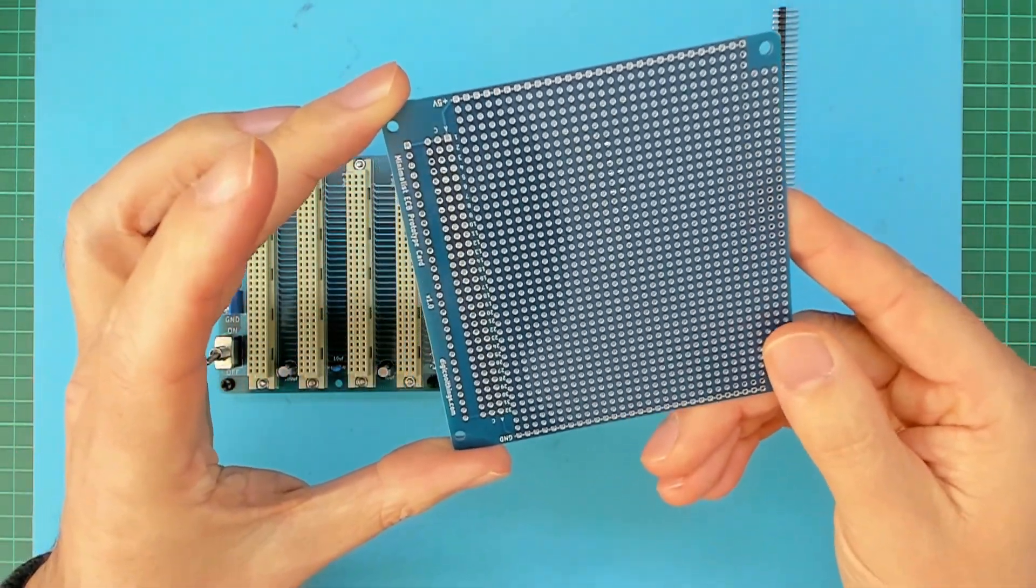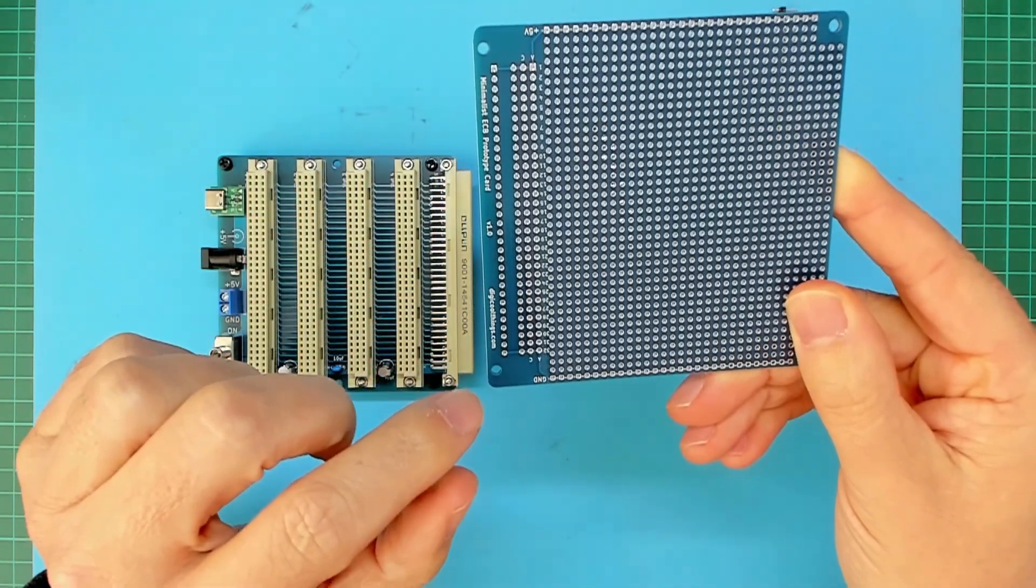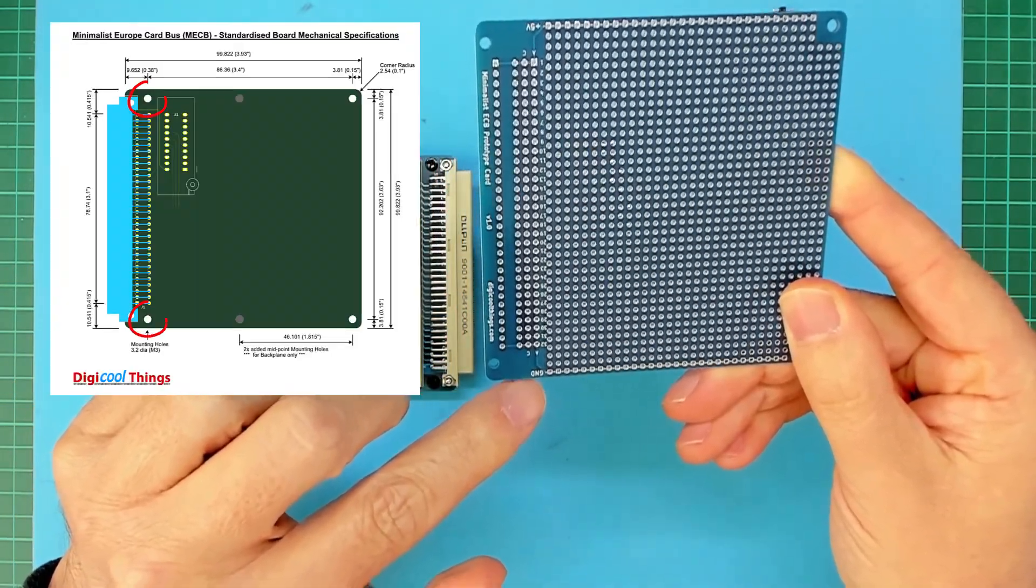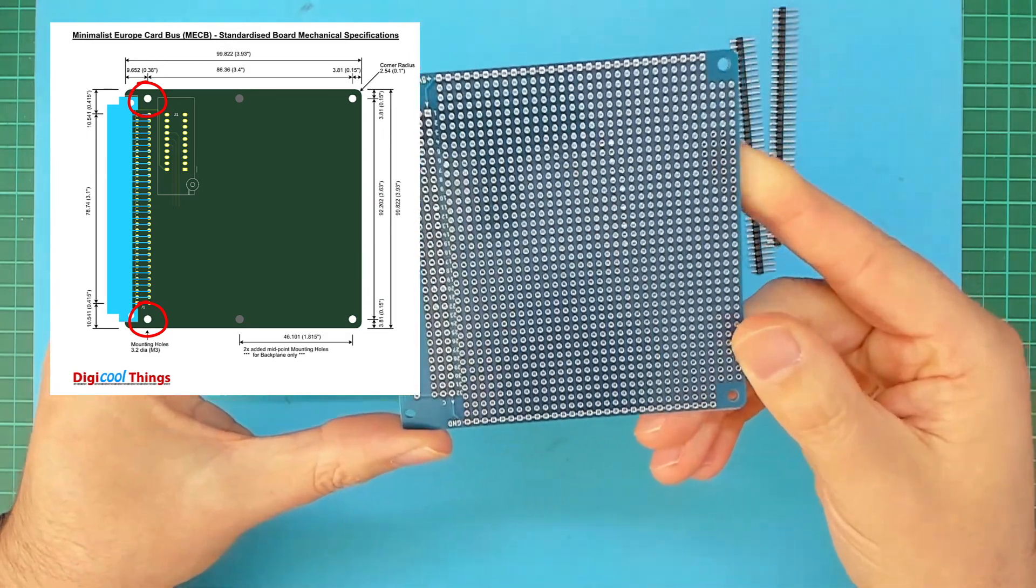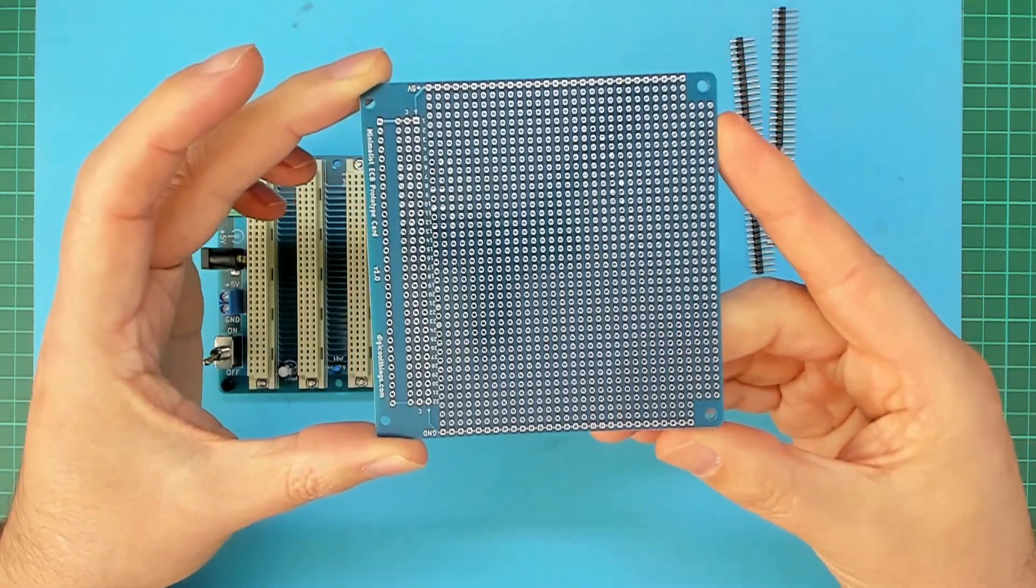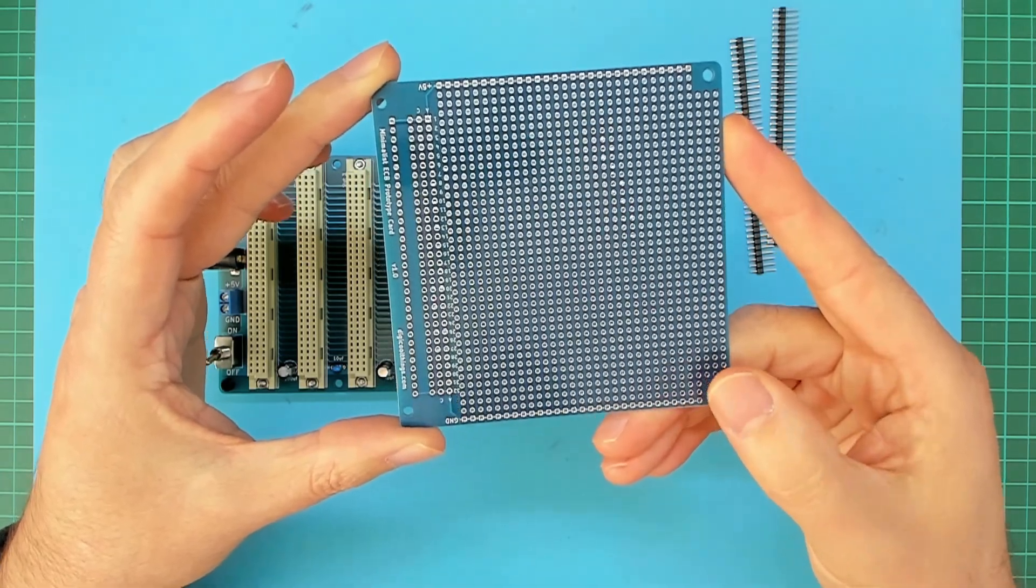Now, those of you with sharp eyes might notice that the two mounting holes on the DIN connector side are missing from these boards. The reason for this is that I actually initially designed and ordered these particular boards at the same time I was finalizing the standard board mechanical specification and creating the KiCad template.